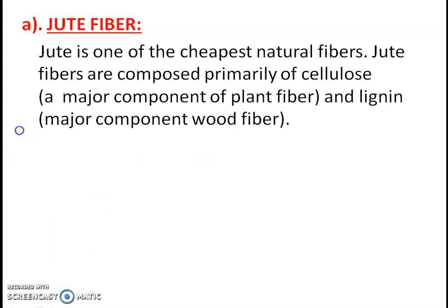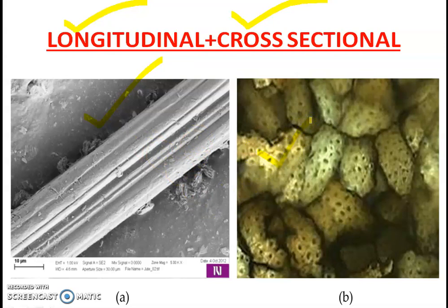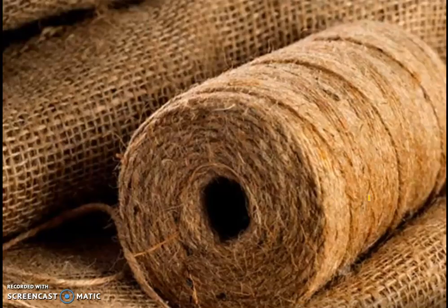Jute fibers are totally biodegradable and recyclable, making them an environment-friendly material. Jute is used chiefly to make cloth for wrapping bales of raw cotton. In the longitudinal view of jute fiber there are crosswise marks called nodes on the joints. In the cross-sectional view the fibers have a small central canal similar to the lumen in cotton. This is the actual jute fiber.